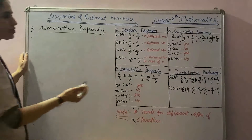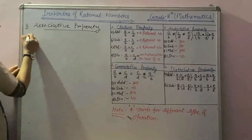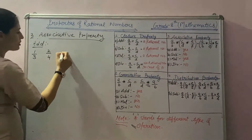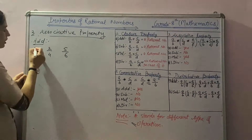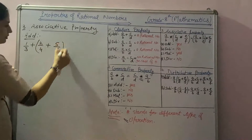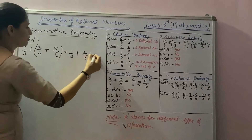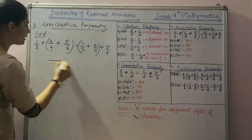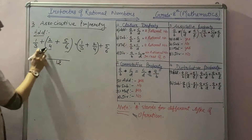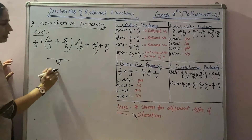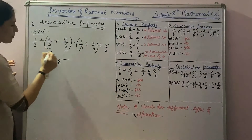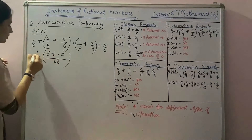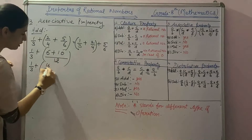Let's check associative property for addition with example. Take three rational numbers: 1 by 3, 2 by 4 and 5 by 6. On the left-hand side, first we solve the bracket with 2 by 4 and 5 by 6. Take the LCM of 4 and 6, we get 12. Divide 12 by 4, we get 3, and 3 multiplied with 2 gives 6. Plus 12 divided by 6 gives 2, and 2 multiplied by 5 gives 10. So 10 plus 6 gives 16 by 12.